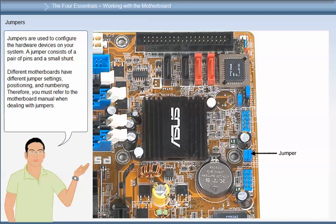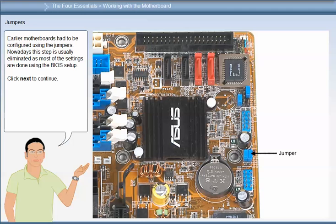Jumpers are used to configure the hardware devices on your system. A jumper consists of a pair of pins and a small shunt. Different motherboards have different jumper settings, positioning and numbering. Therefore, you must refer to the motherboard manual when dealing with jumpers. Earlier motherboards had to be configured using jumpers, but nowadays this step is usually eliminated as most settings are done using the BIOS setup.